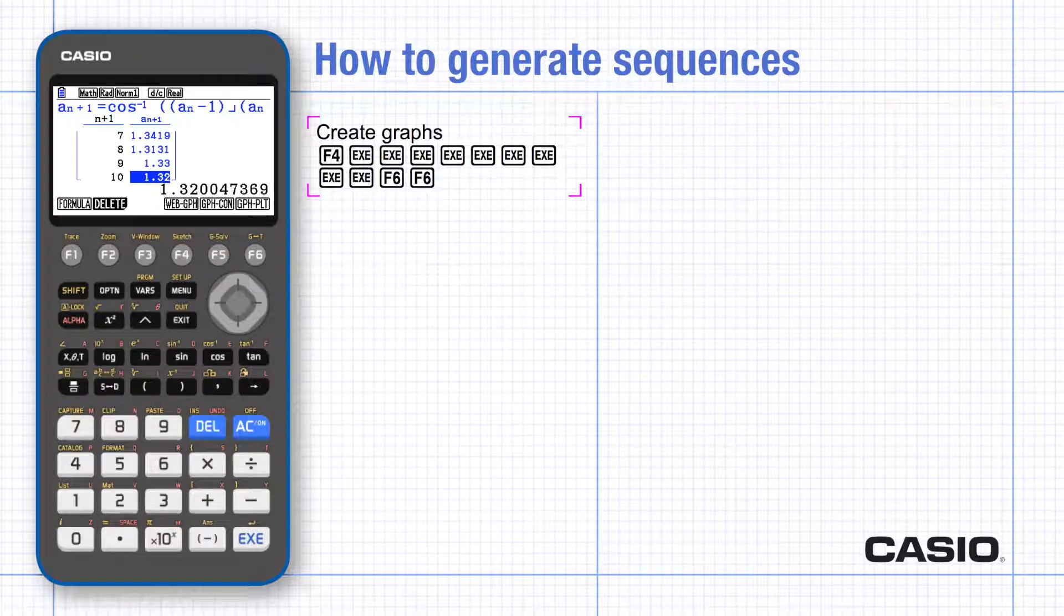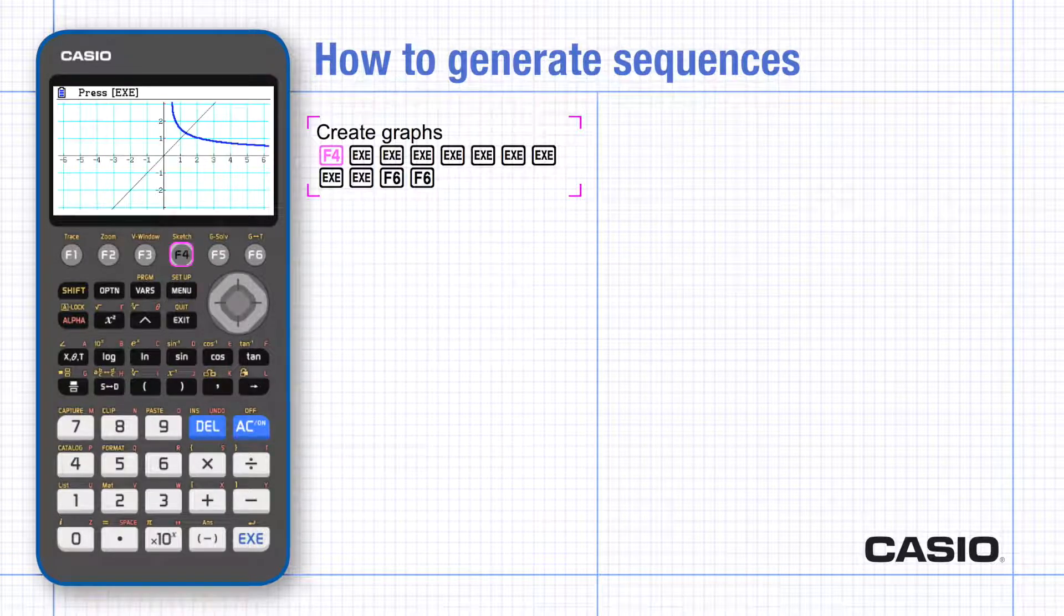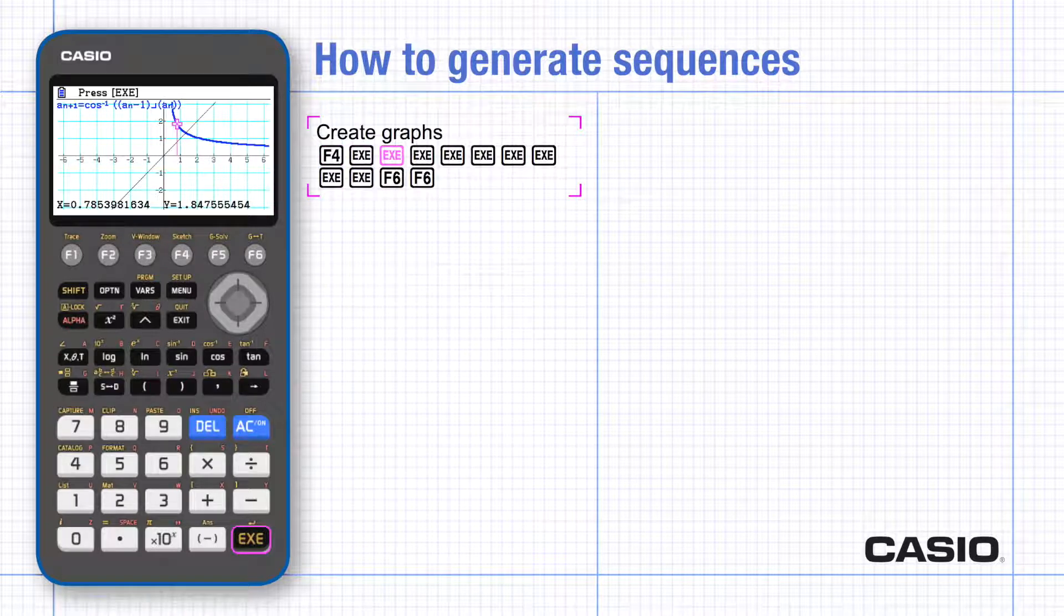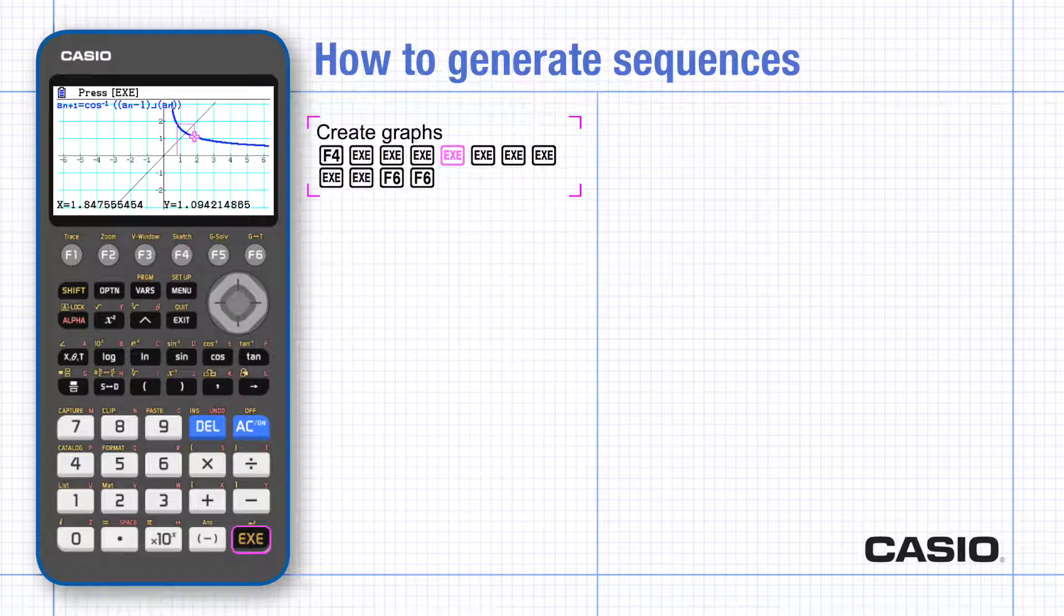It's often clearer to see the sequence as a cobweb graph. To do this, click web graph and then execute to bring up the start value. Execute again to see the cobweb appear step by step.